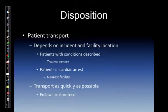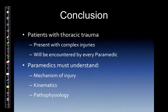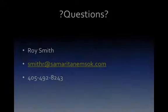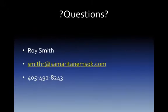Patient transport depends on incident and facility location. Patients with the conditions described should go to a trauma center. Patients in cardiac arrest should go to the nearest facility for stabilization. Transport as quickly as possible and follow local protocol. In conclusion, patients with thoracic trauma presenting with complex injuries will be encountered by every paramedic. Paramedics must understand the mechanism of injury, kinematics, and pathophysiology. For questions, contact Rory Smith at smithrts@samaritanemsok.com or 405-492-8243.